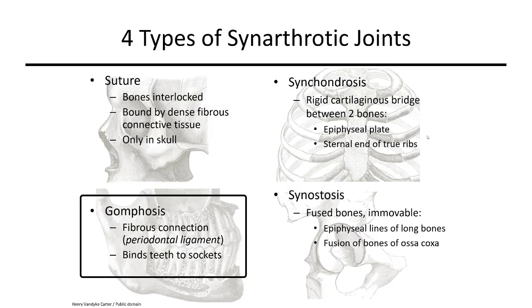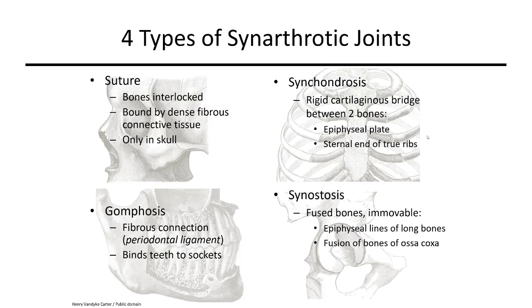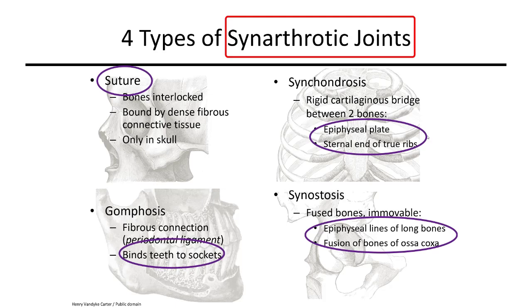Finally, teeth are held by ligaments in the bone of the upper and lower jaw, the maxilla and mandible. These are the gomphosis. All of these are immovable joints with the overall classification of synarthritic joints. For this class you only need to know examples such as sutures in the skull or teeth in the jaw. Don't worry about the names of these subcategories.